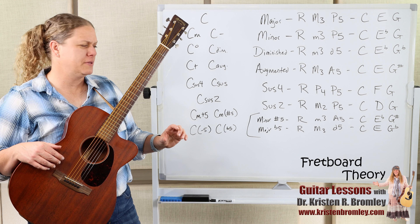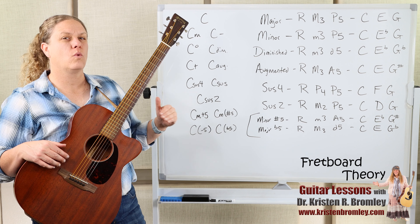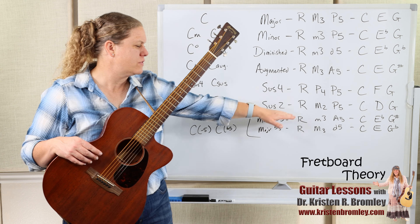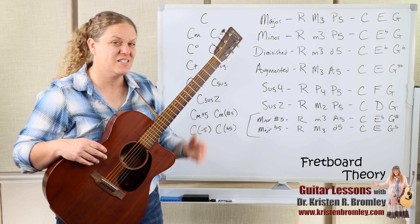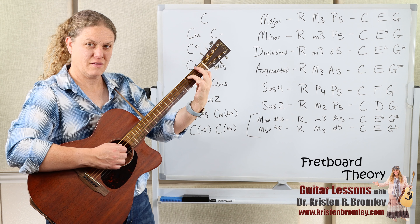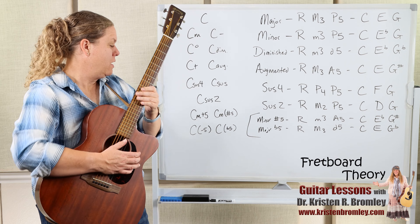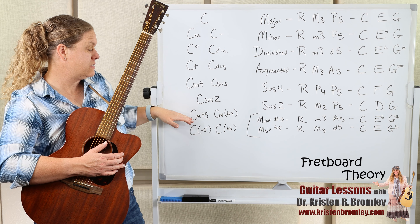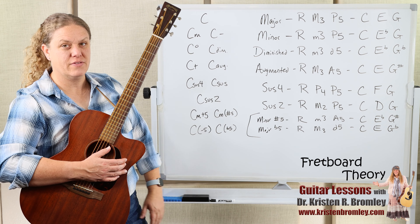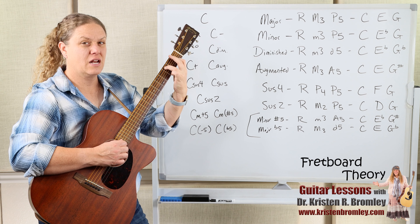There are a couple of other chord types — a little less common, but we do run into them, especially when we start adding sevenths. We've got the minor chord with a sharp five. This has the root, the minor third, and the augmented fifth — root, flat three, sharp five. In the key of C, that's C, E flat, and G sharp. The chord symbol would show the root, then something indicating it's minor — lowercase M or minus sign — plus a sharp five or plus five.